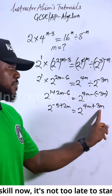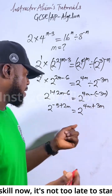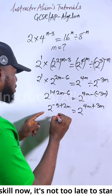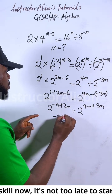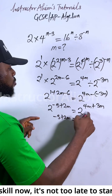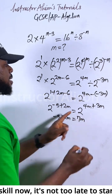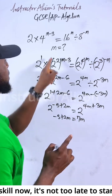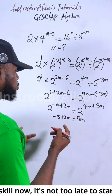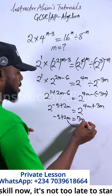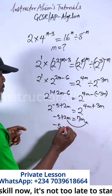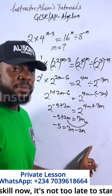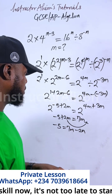Adding 4m and 3m gives us 7m. Now, since the bases are the same, just equate the powers: minus five plus two m equals seven m. To find m, we rearrange: negative five equals seven m minus two m. Seven m minus two m gives us five m. So m equals negative one.